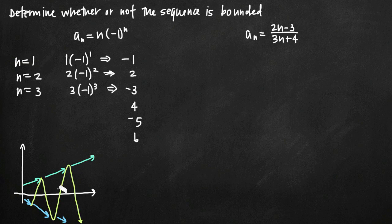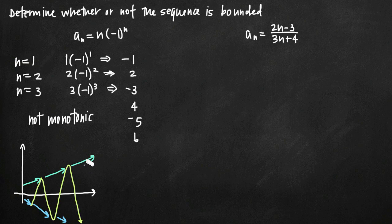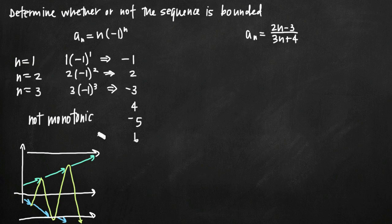The farther out we go, the more extreme these values get. The sequence is never going to either consistently increase or decrease — it keeps oscillating back and forth between positive and negative values. As a result, we call this sequence not monotonic. And because it's not monotonic, we can't say the sequence is bounded, since the largest value continues to get larger and the smallest value continues to get smaller. There's no upper or lower limit, so the sequence is not bounded.